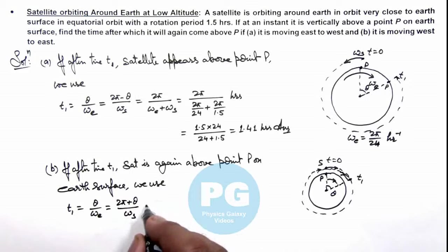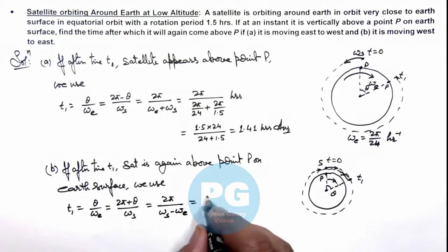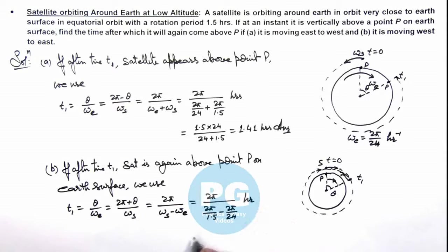On subtracting these values we can see the result is 2π/(ωₛ-ωₑ). On substituting the values this is 2π/(2π/1.5 - 2π/24). So on simplifying this will be 1.5×24/(24-1.5), further on simplifying this will give us 1.6 hours.